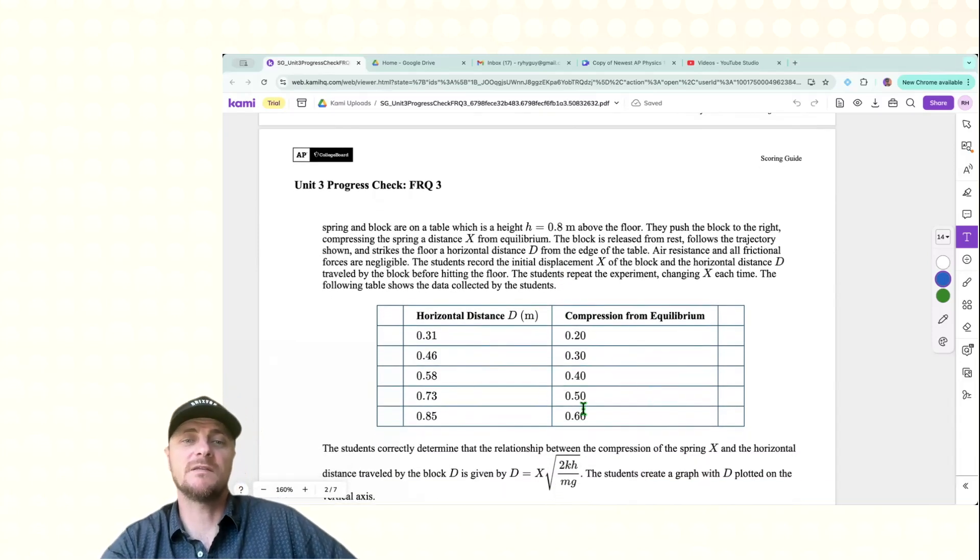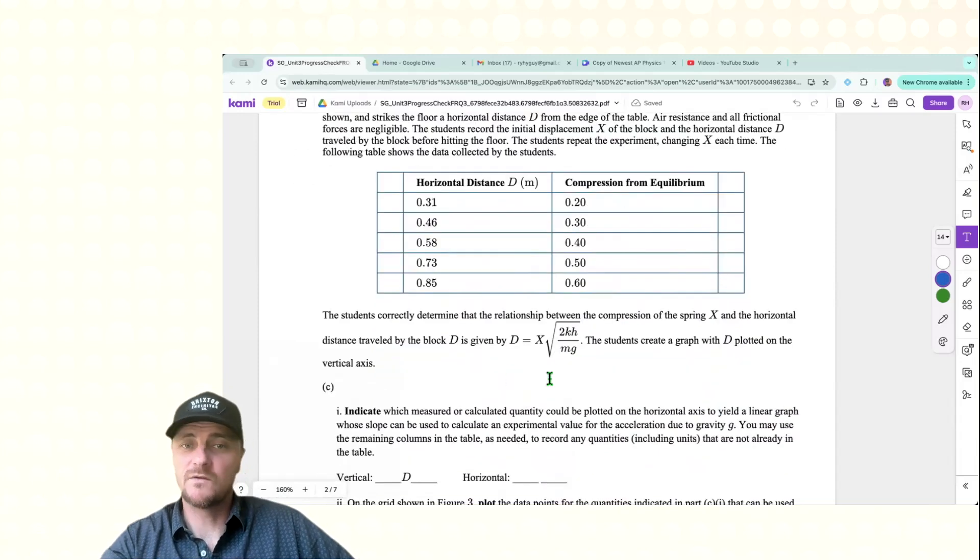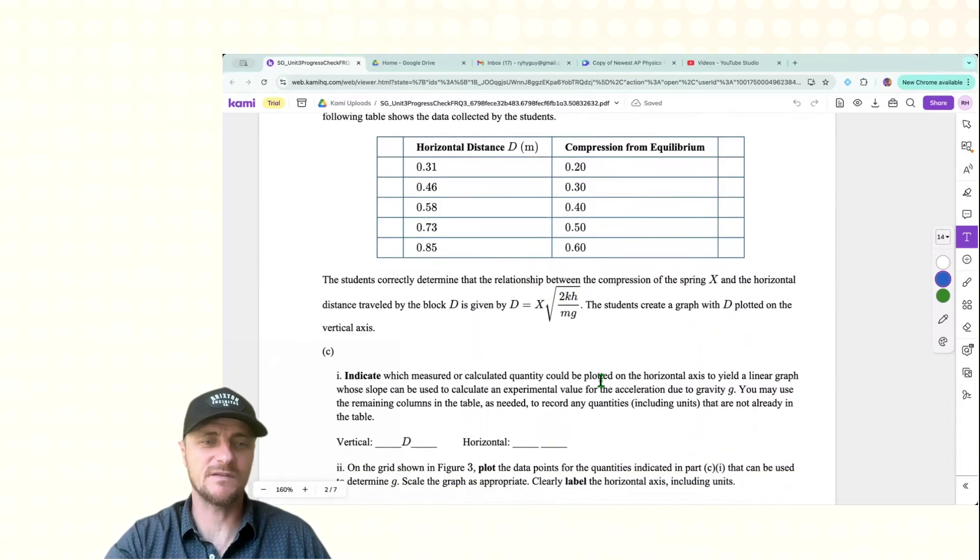And here is the data that comes out. So we compress, this is our X, different lengths, all separated by a tenth of a meter. And then we achieve these different horizontal distances, D. The students correctly determine this expression. D is equal to X times the square root of 2KH over MG. All right, we're finally ready to get into Part C.